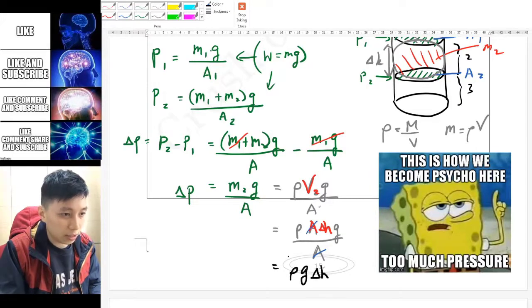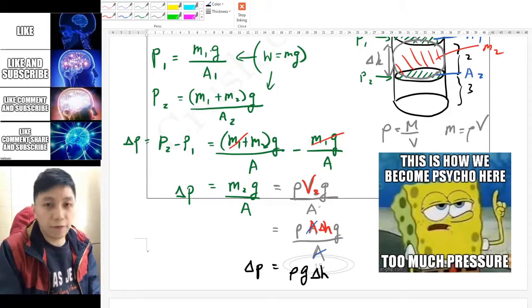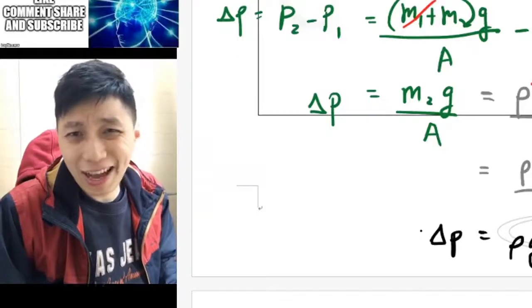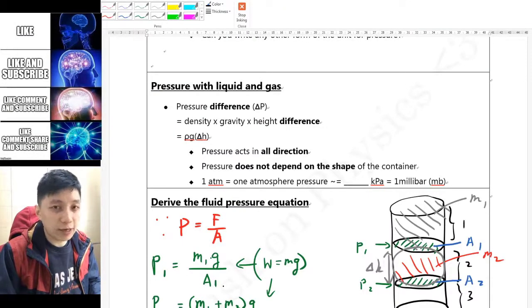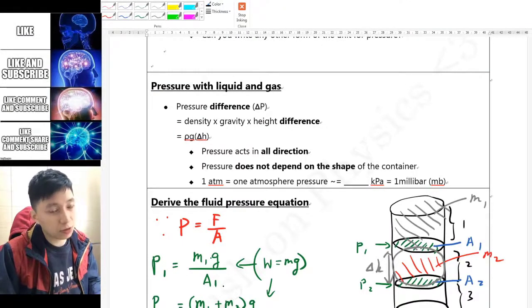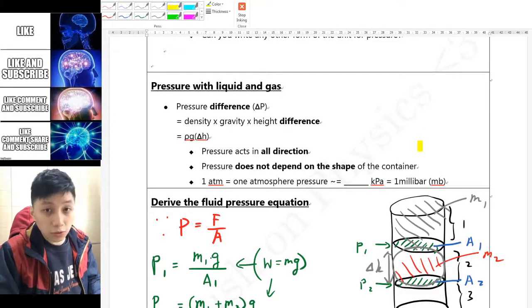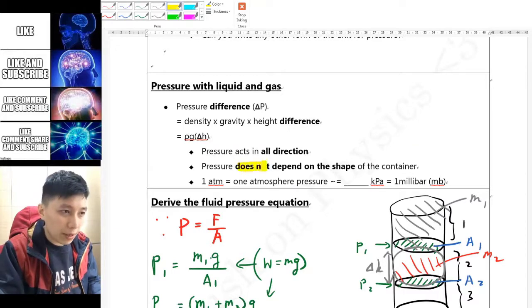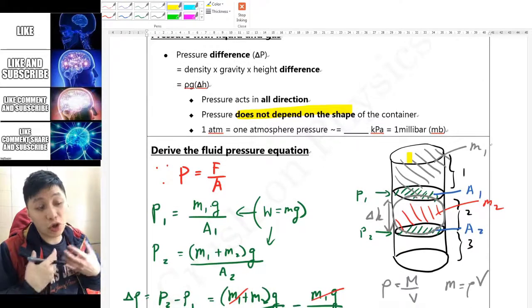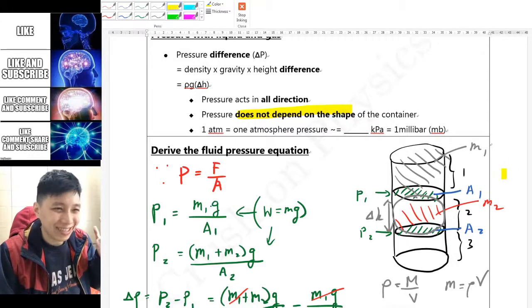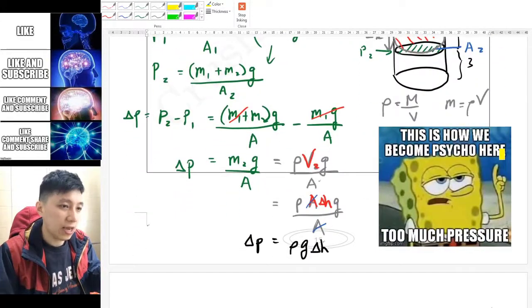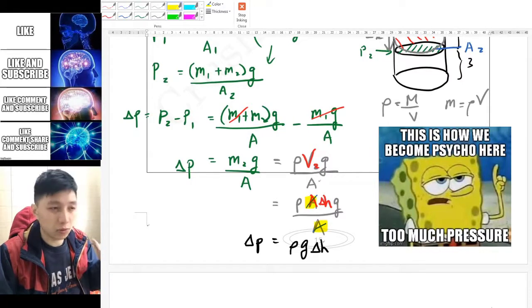After you derive this equation I hope you have realized why it is important to point out it is pressure difference and also height difference. Also the reason why it does not depend on the shape of the container - if you look at the diagram that we drew we just chose it to become cylinder, it could be rectangular, it could be triangle, it could be any shape. But it doesn't matter because eventually the area would cancel out, so it doesn't really matter what shape it is.